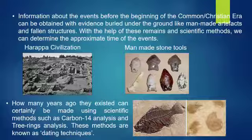By using scientific methods such as carbon dating analysis and tree rings analysis, we can find out the age of artifacts. For example, if an earthen pot is estimated to be 5,000 years old with the help of dating techniques, we can say that the earthen pot dates back roughly to 3000 BC. Then we can conclude that the period of the culture to which the pot belongs must be around 3000 BC.